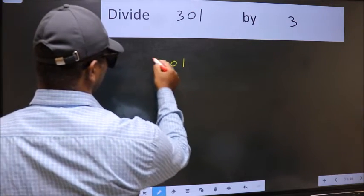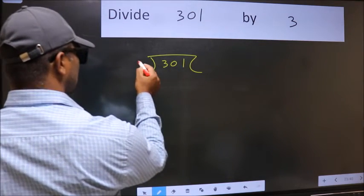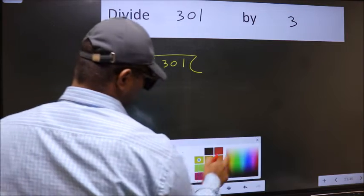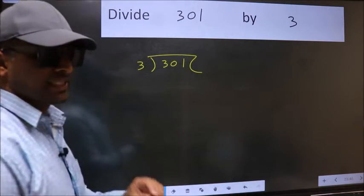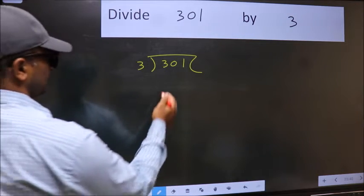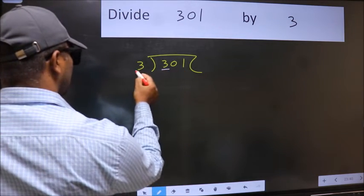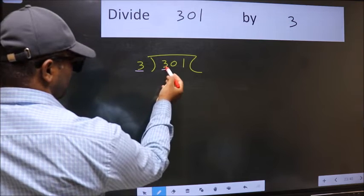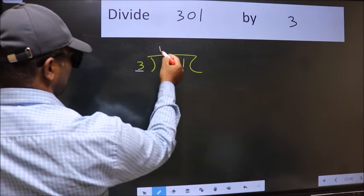301 and 3 here. This is your step 1. Next, here we have 3 and here also 3. When do we get 3 in 3 table? 3 once 3.